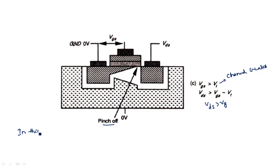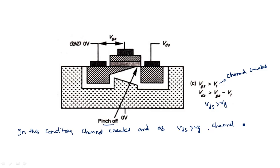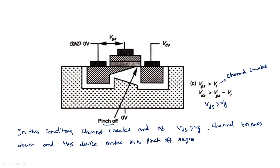In this condition, the channel is created, but as VDS is greater than the effective gate voltage, the channel breaks down and the MOS transistor enters into the pinch-off region, where there is no current improvement — meaning the transistor enters into saturation region.